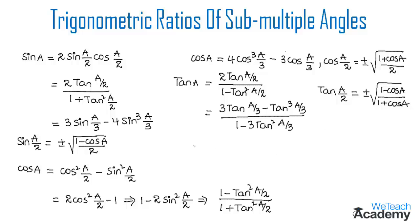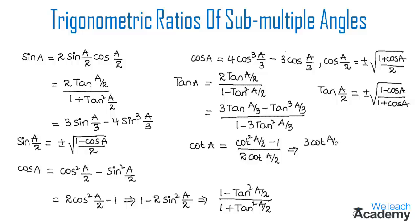The next trigonometric ratio is cot A. So cot A will be equal to cot squared(A/2) minus 1 divided by 2 cot(A/2). And for multiples of A by fractions like 1/3, the formula will be 3 cot(A/3) minus cot cubed(A/3) divided by 1 minus 3 cot squared(A/3).